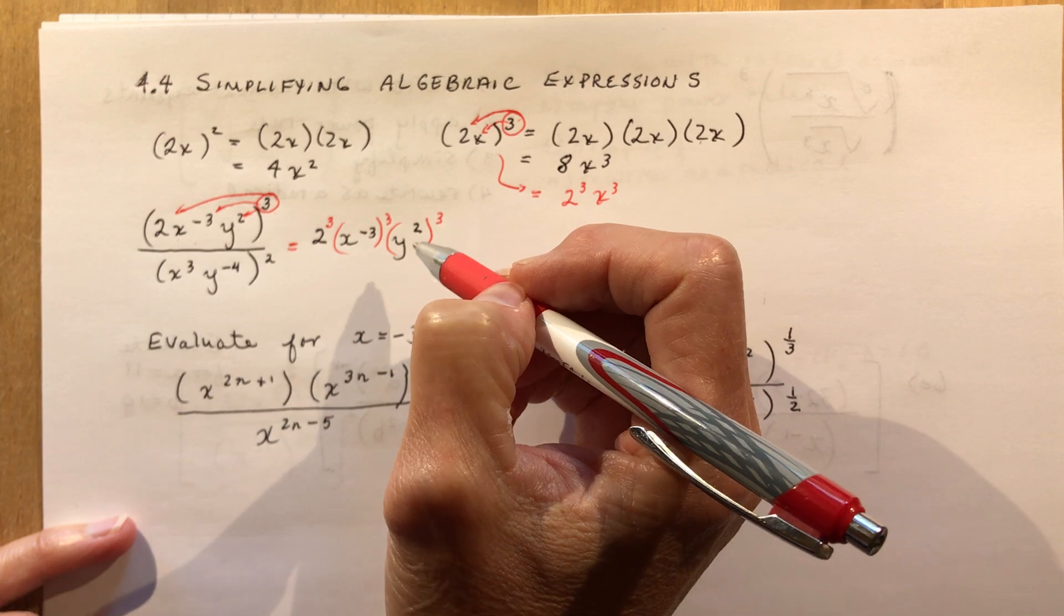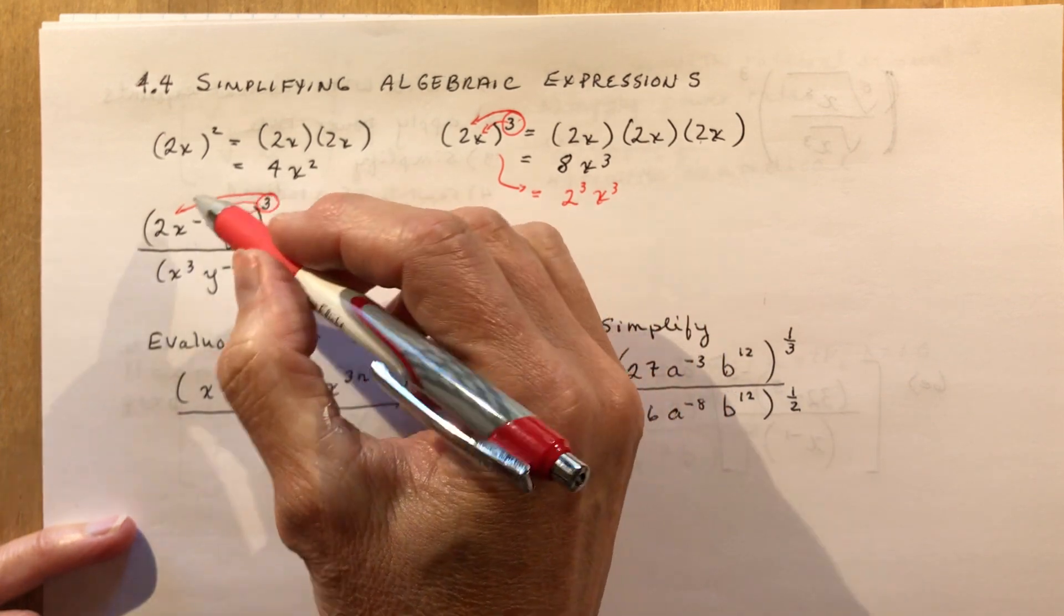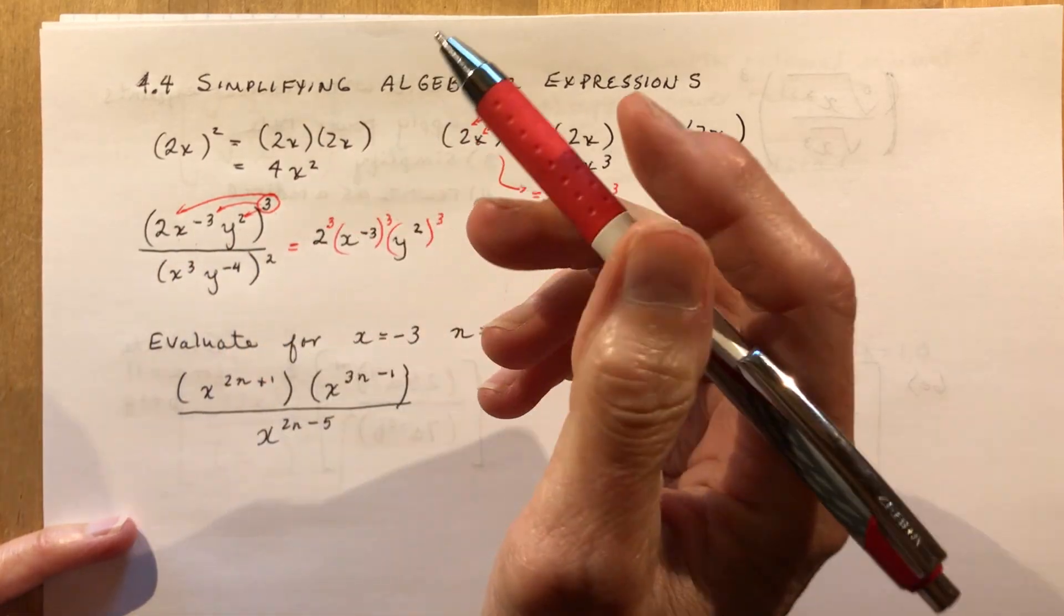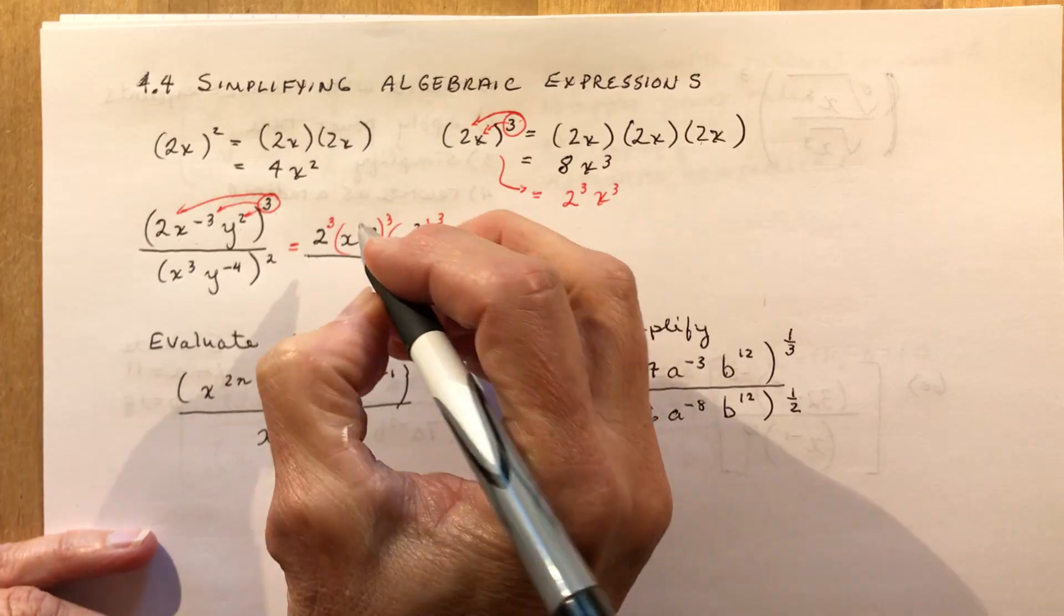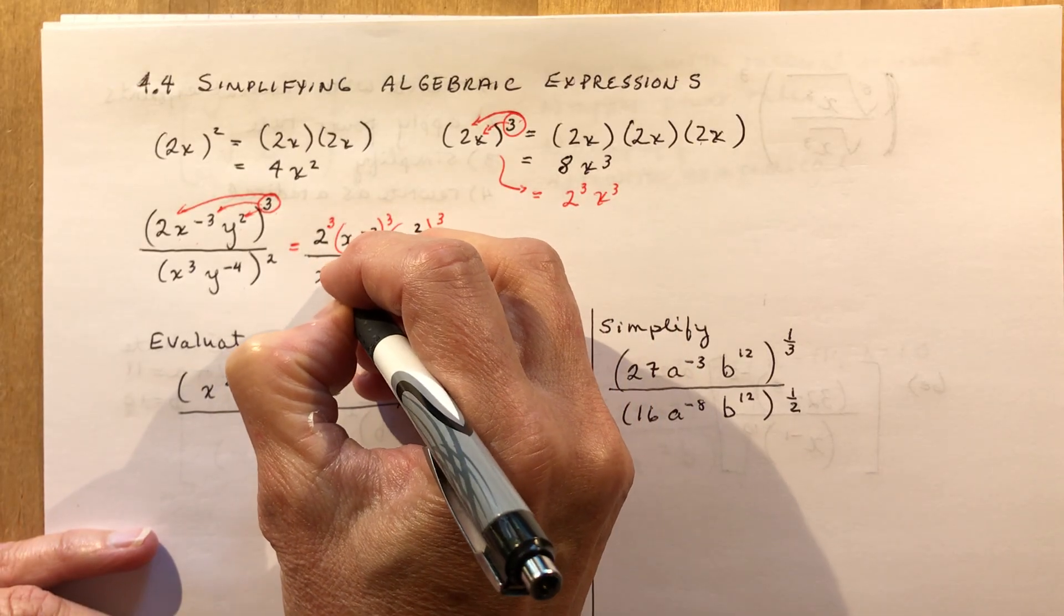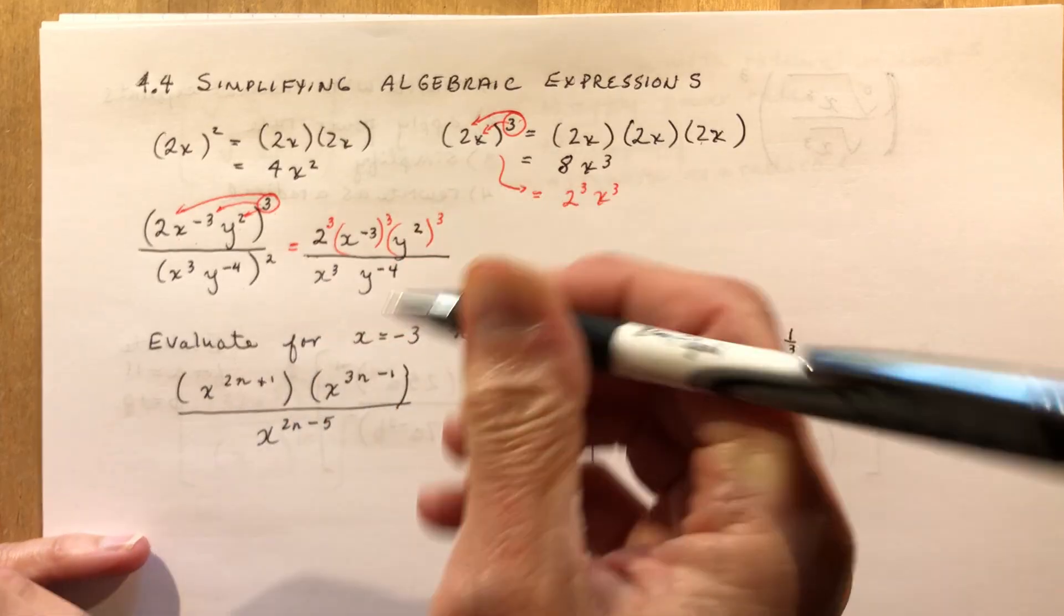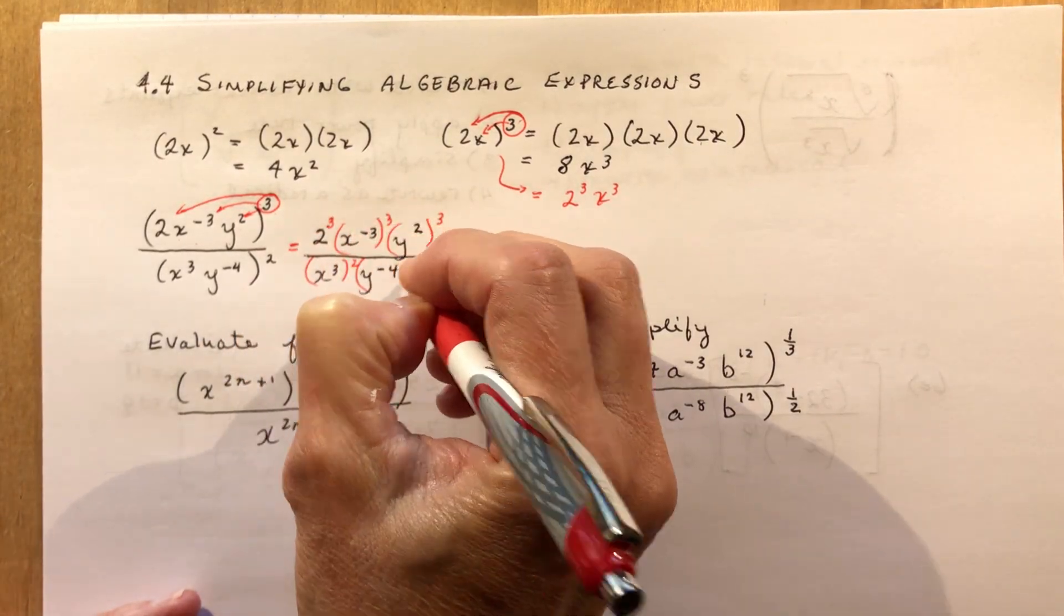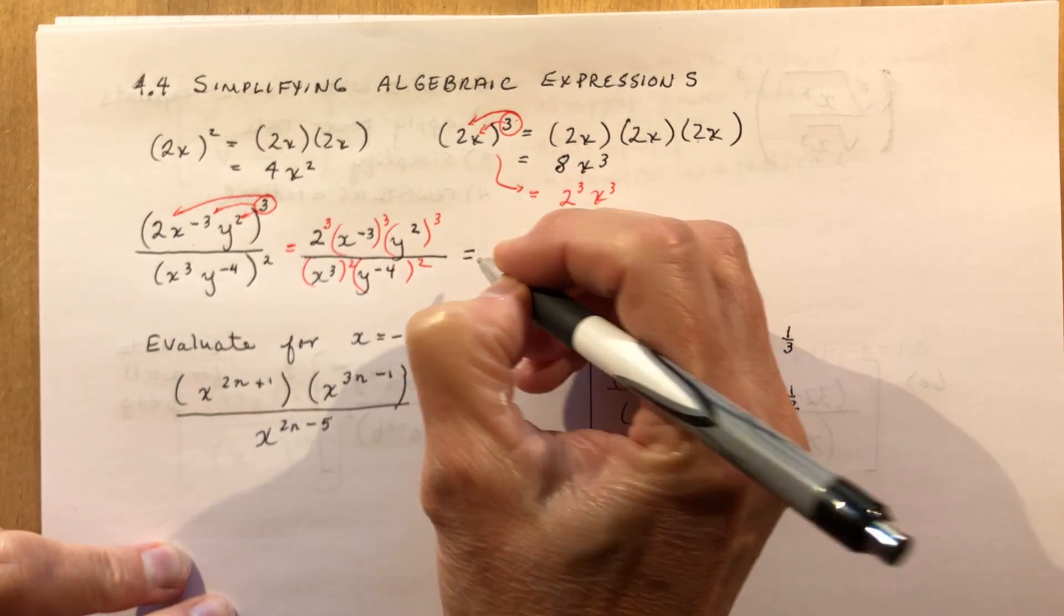A usual, very common mistake is people forgetting to apply this exponent to the constant. The constant is also affected by this. So don't mess that up. Don't forget to do it. So I have x cubed and I had y to the minus 4, and these are all squared. So I have this to the power of 2, this to the power of 2.